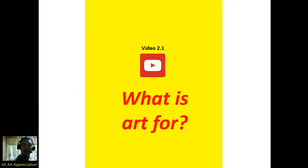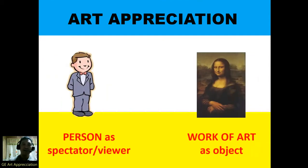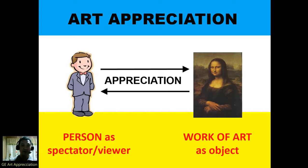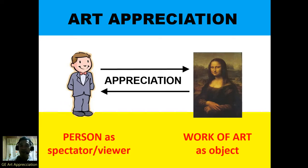So what is art for? What is the purpose of art? Pocket meron tayo subject na art appreciation — what is art for? In studying art appreciation, there should be two means. First, there should be a person as spectator — a viewer — and there should be an object, or the work of art. These two should be interrelated to each other. Kung wala yung tao, sino mag-appreciate ng work of art? So these two means should be interrelated: the person as spectator and the work of art as object.